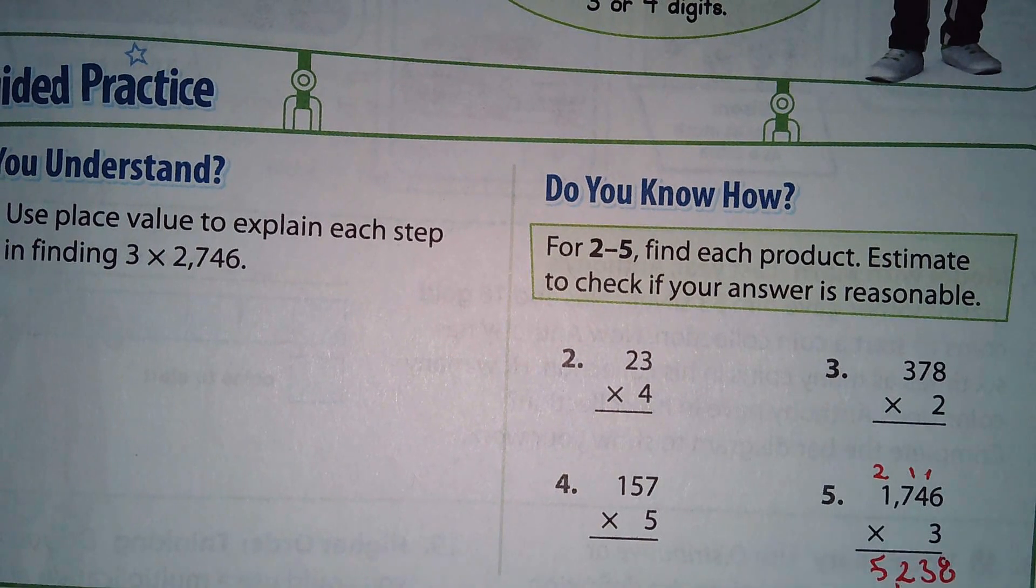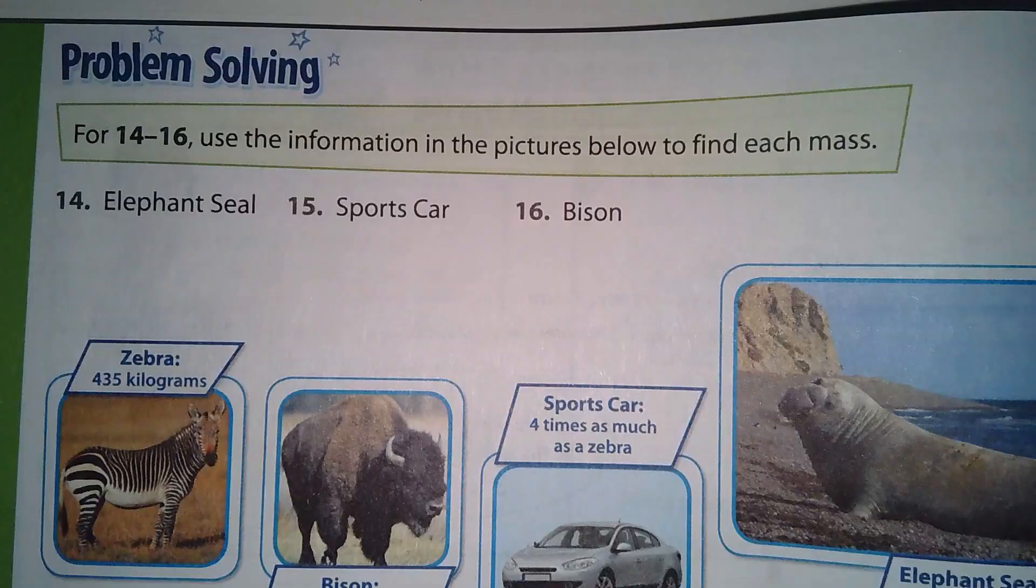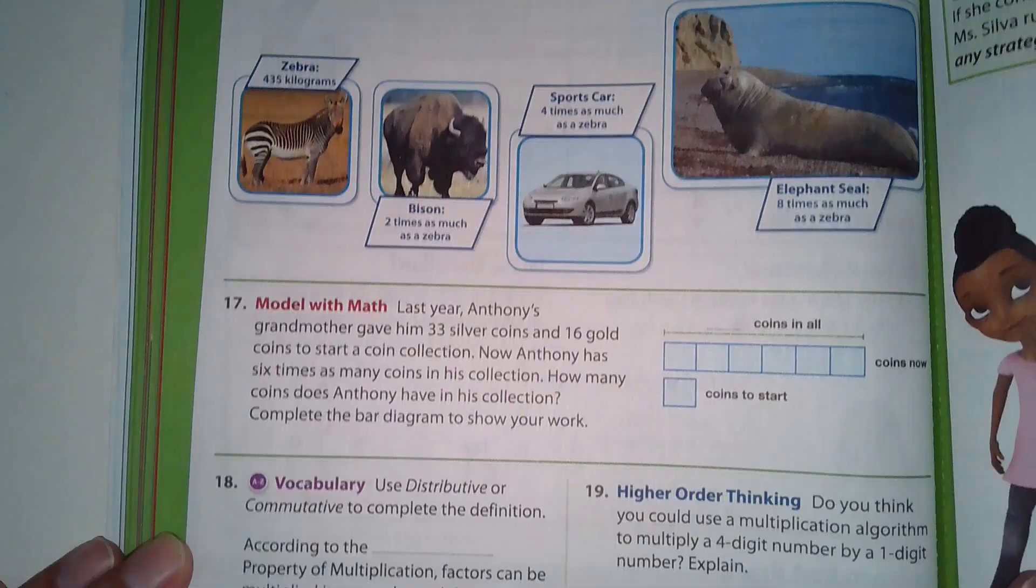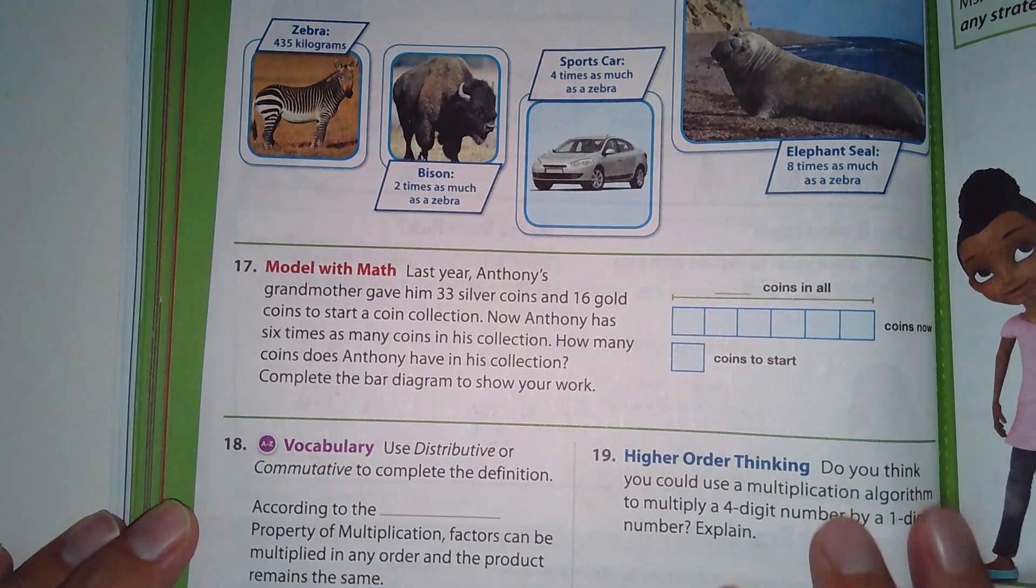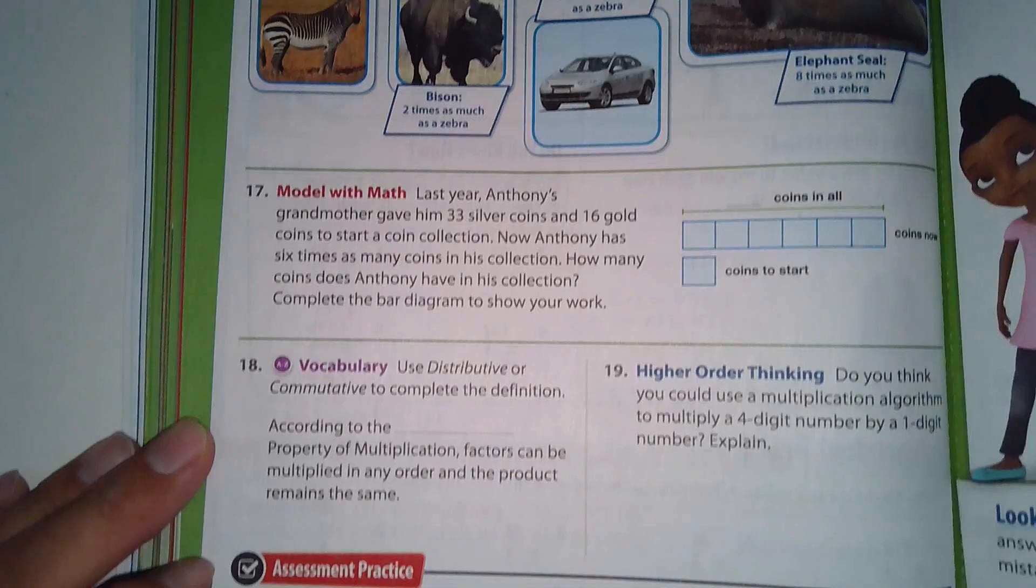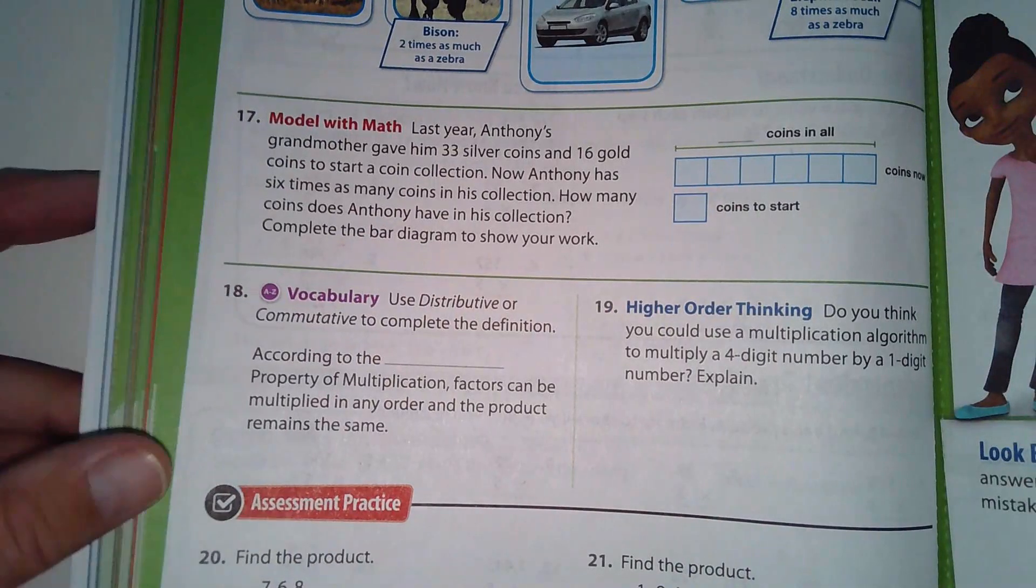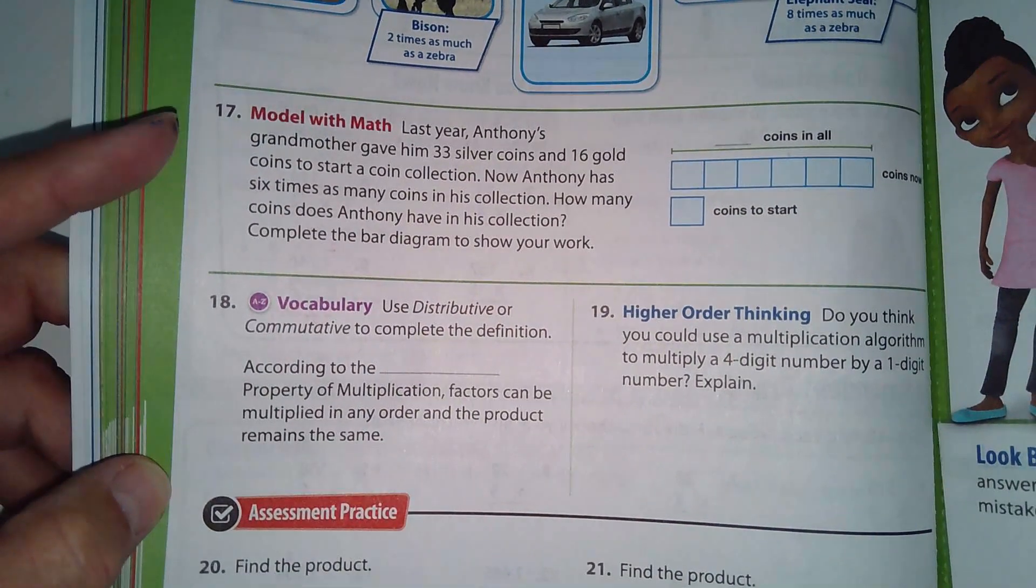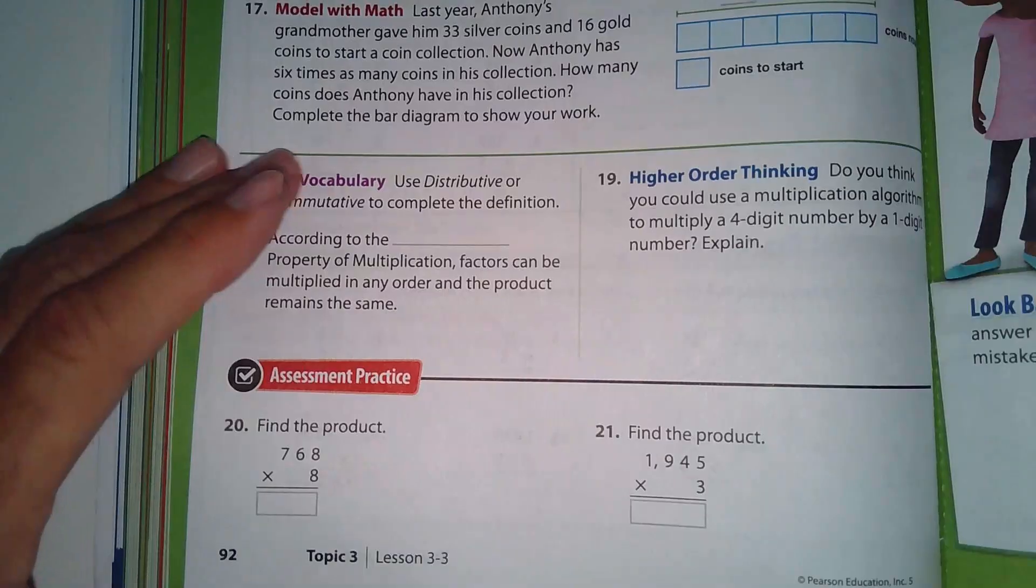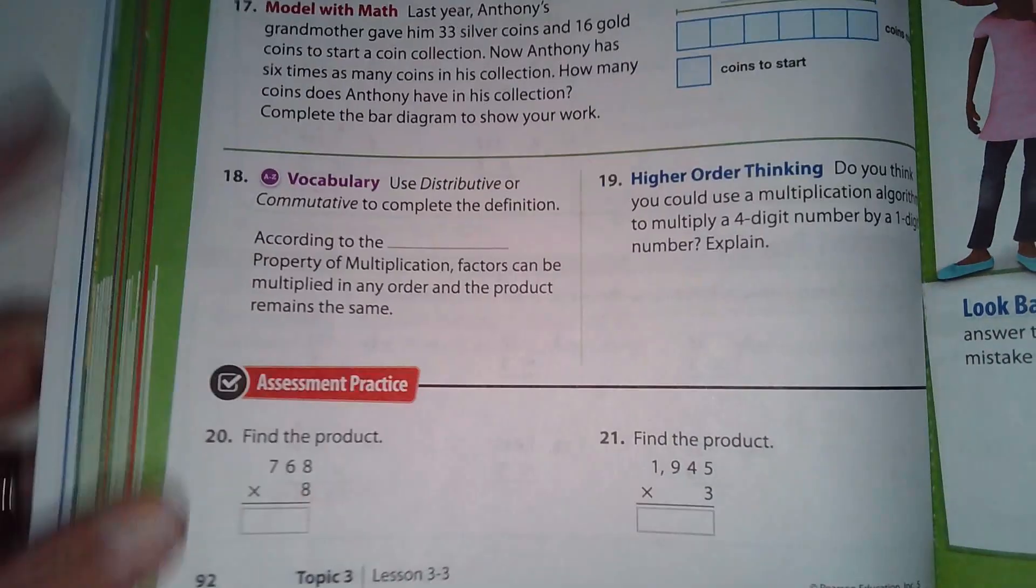I just want you guys to do mainly pages 91 and 92, which will require a little more thought involved. We got some word problems in here, but the calculations will involve just simply multiplication of single-digit products. I think you guys can do this on your own, so I'm going to have you guys work on this quietly for about five to ten minutes. Pages 91 and 92. Right now it's classwork, if you don't get it done it will be homework.